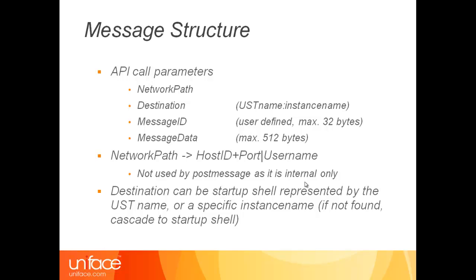The Message API has four parameters. The first parameter, the network path, consists of a host ID — which could be a DNS name or IP address — followed by an optional port number, then a vertical pipe and a valid operating system username. No password is necessary. Note that this first parameter, the network path, is not used by the PostMessage PROC statement, as PostMessage is restricted to sending to target instances inside the same runtime environment and will not go to the network.